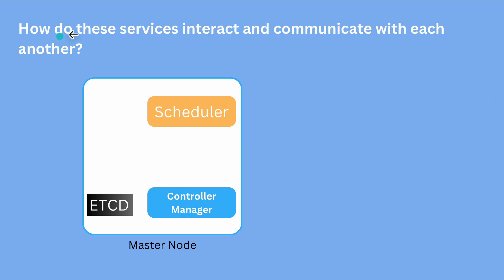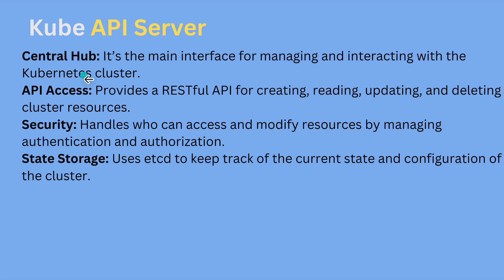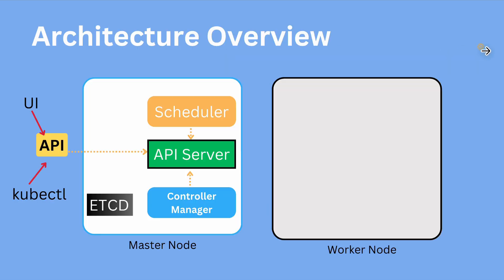Now, how do these services communicate with each other — how do the scheduler, controller manager, and etcd communicate? For this we have the kube-apiserver, which is a central hub providing API access, security, and state storage. The kube-apiserver is used within the master node to facilitate communication between all its components.